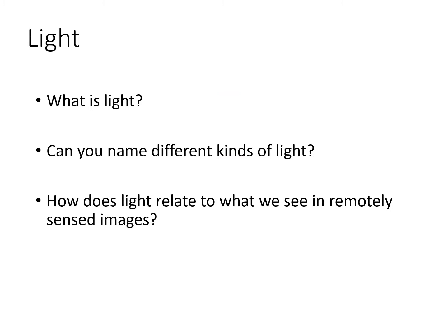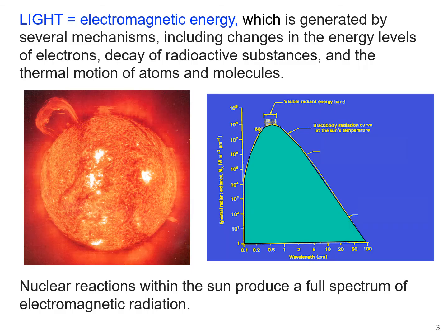Now we'll get to a series of topics on light. What is light? What are the different kinds of light? And how does light relate to what we see in remotely sensed images? Light is electromagnetic energy, which is generated by several mechanisms: changes in the energy level of electrons within atoms, the decay of radioactive substances, and the thermal motion of atoms and molecules. All three can generate photons, which are electromagnetic energy.